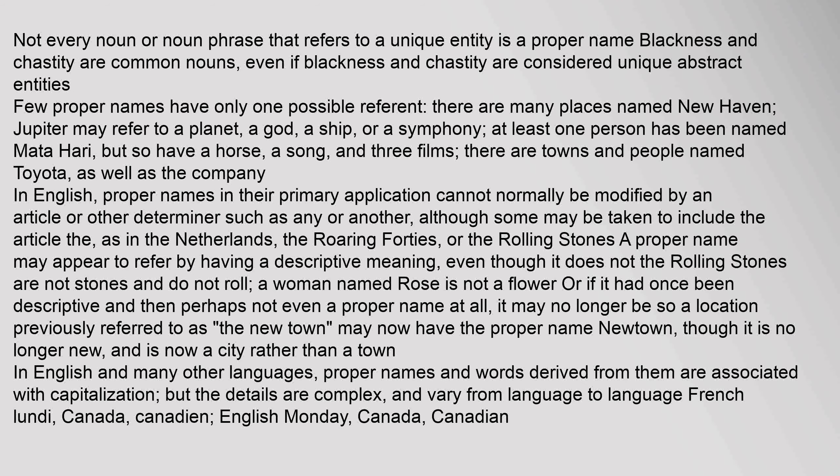Not every noun or noun phrase that refers to a unique entity is a proper name. Blackness and chastity are common nouns, even if considered unique abstract entities. Few proper names have only one possible referent: there are many places named New Haven; Jupiter may refer to a planet, a god, a ship, or a symphony; at least one person has been named Mata Hari, but so have a horse, a song, and three films; there are towns and people named Toyota, as well as the company.